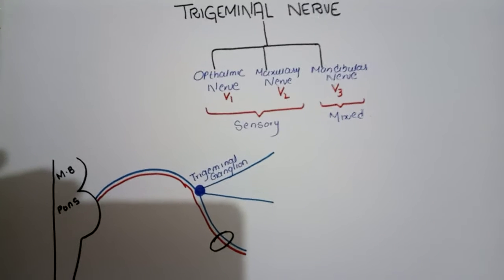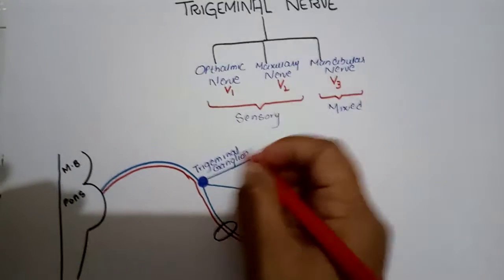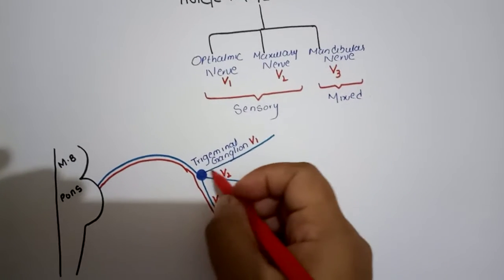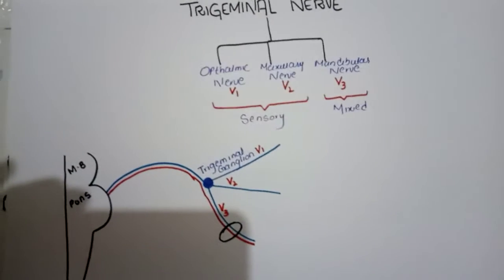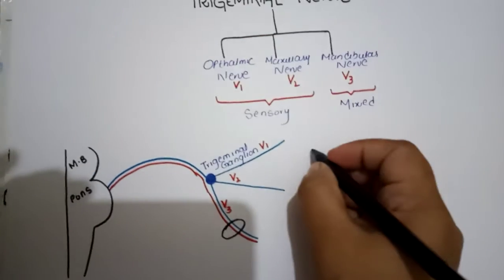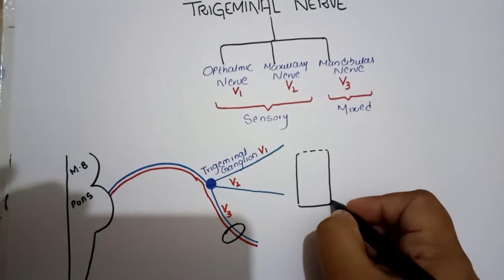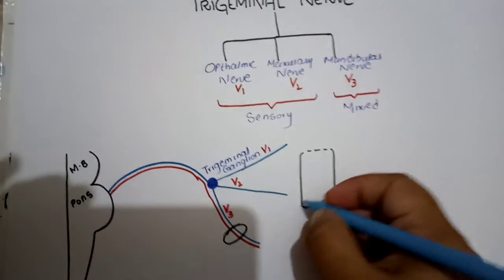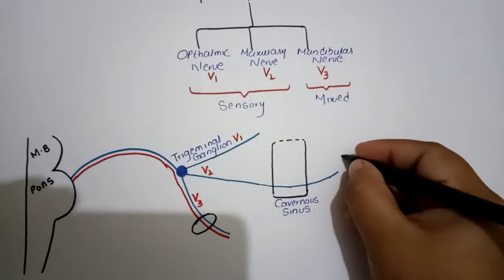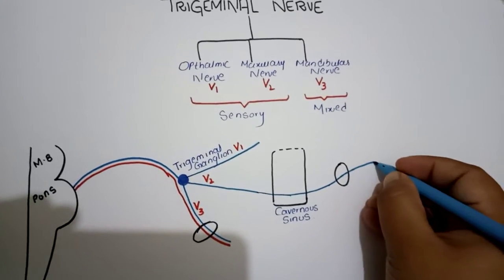That is why the mandibular nerve is the mixed nerve, and through the foramen ovale it leaves the skull. In this video I will explain the course and distribution of the maxillary division of the trigeminal nerve, as I have explained the ophthalmic division in my previous video. As the maxillary nerve moves forward, it enters the middle cranial fossa, within which is the cavernous sinus, and the maxillary nerve enters the lateral wall of the cavernous sinus. After leaving the cavernous sinus, it enters the foramen rotundum, through which it leaves the skull and enters the inferior orbital fissure.